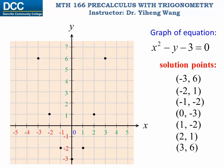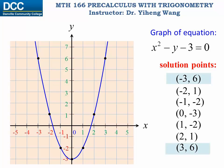If you recall how we used the point plotting method to sketch this graph, we started by plotting several solution points and then connecting them with a smooth curve. Examining these solution points, we notice a relationship: negative three, six and positive three, six; negative two, one and positive two, one; negative one, negative two and positive one, negative two. For every point (x, y) on the graph, its mirror image — the point (-x, y) — must also be on the graph.